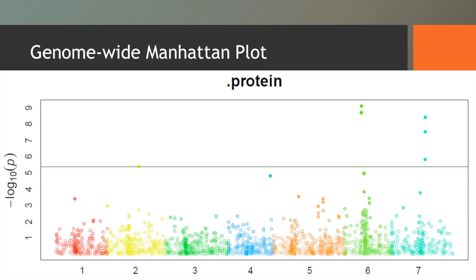It does do the genome-wide Manhattan plot, and you can set the significance level. And so again, the markers that show up significant for this trait, they're on protein, excuse me, they're on chromosome 6 and 7, and so you can clearly see that in the diagram.